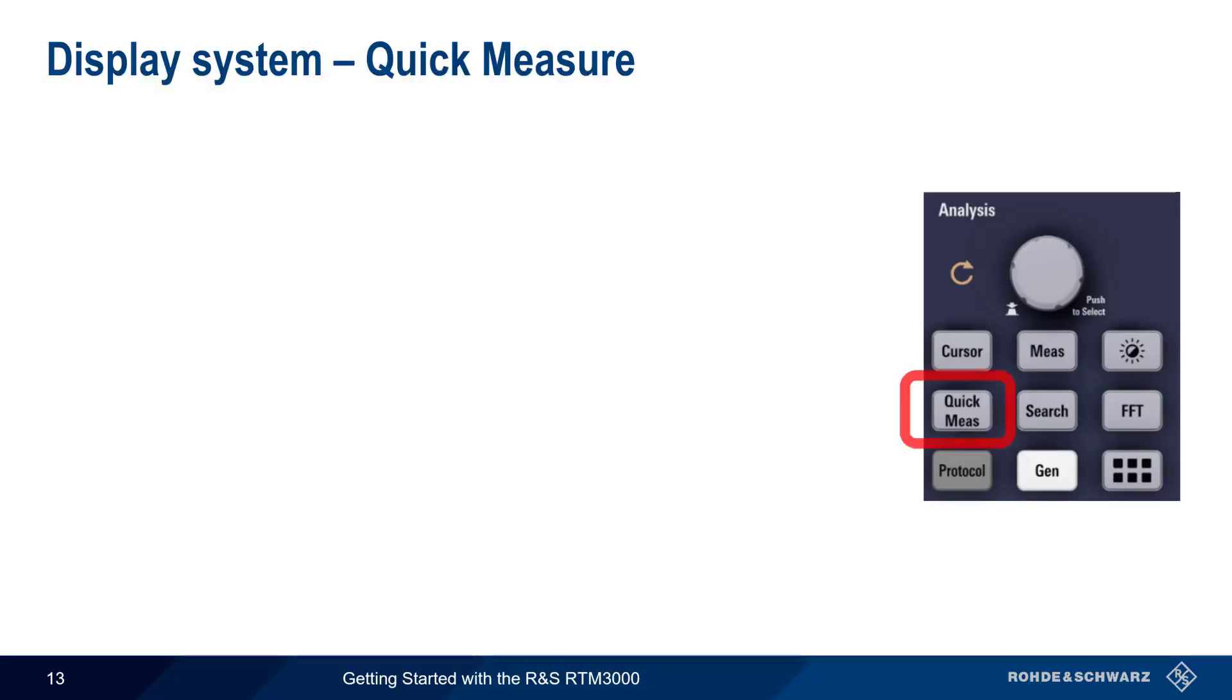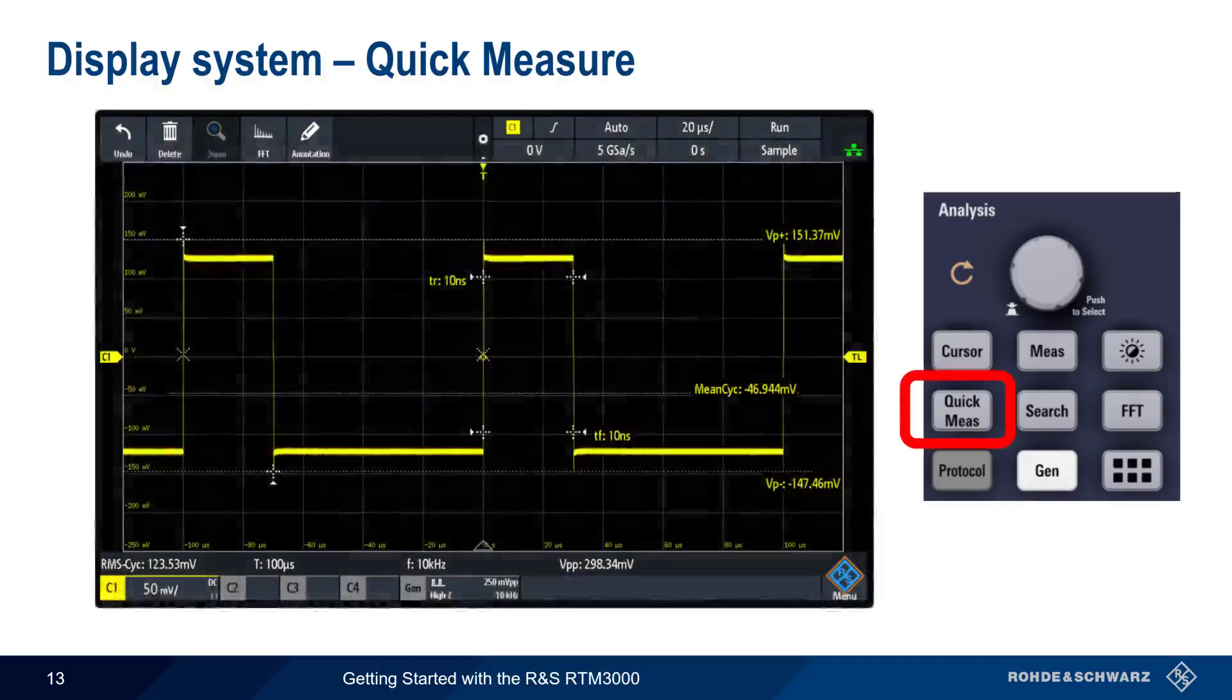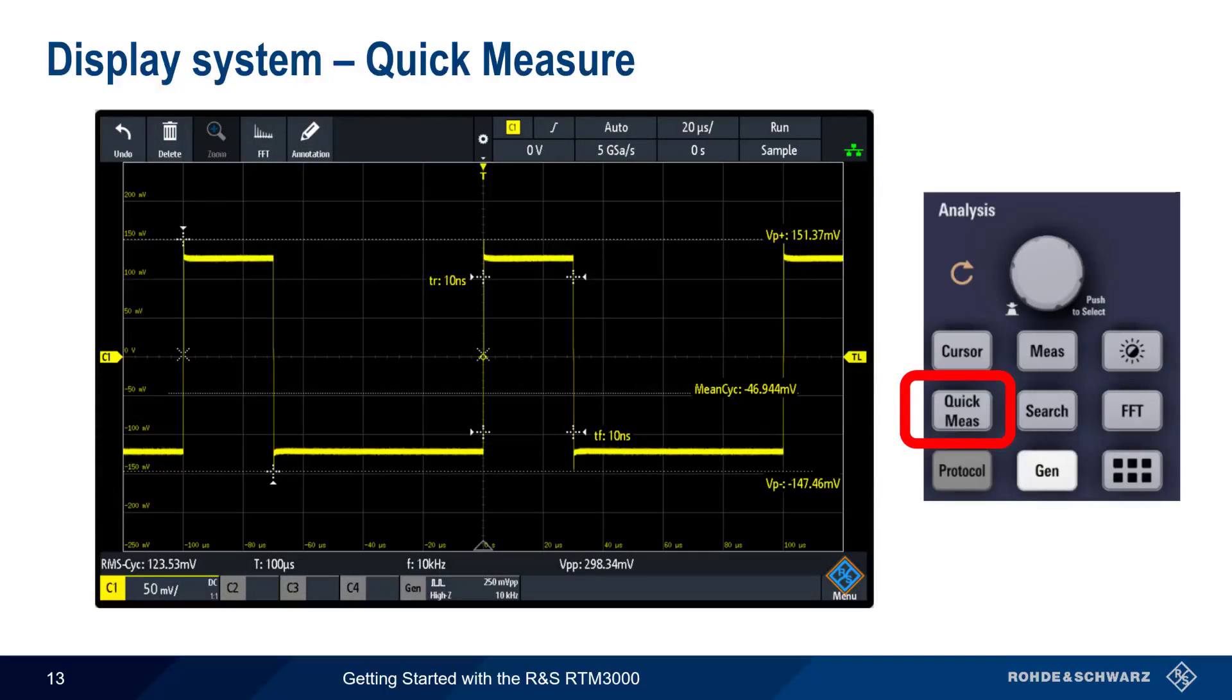A further enhancement is the quick measure function, which enables several automatic measurements of the signal and displays those measurements directly on the screen. For example, rise time and fall time, positive and negative peaks, etc.